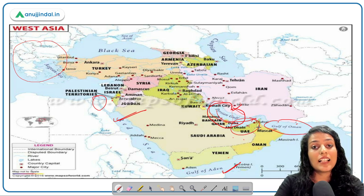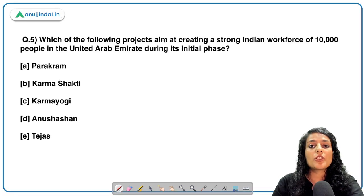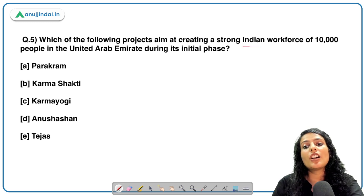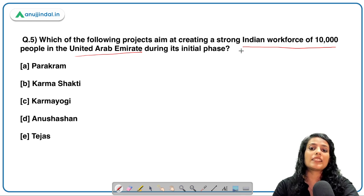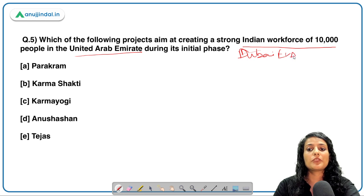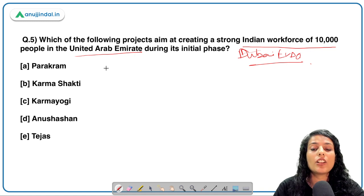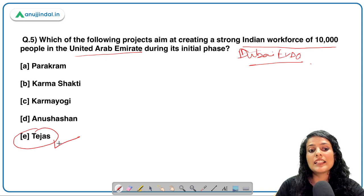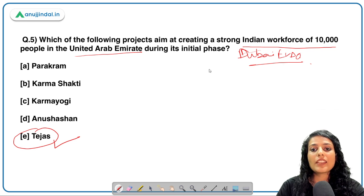Next question: which of the following projects aims at creating a strong Indian workforce of 10,000 people in UAE? This is again related to the ongoing Dubai Expo 2022. The Ministry of Information and Broadcasting has launched a scheme named TEJAS — Training for Emirates for Jobs and Skills. TEJAS aims to create a strong Indian workforce of 10,000 people in UAE in its initial phase.